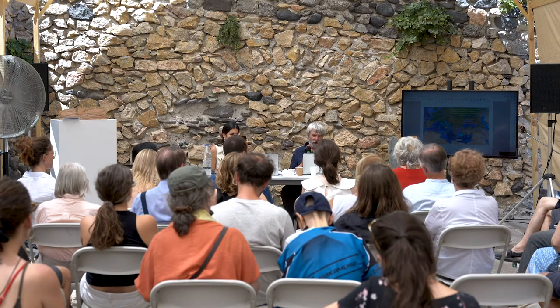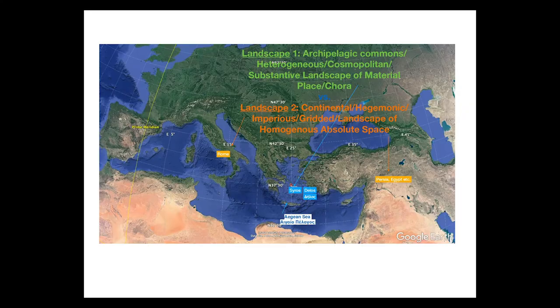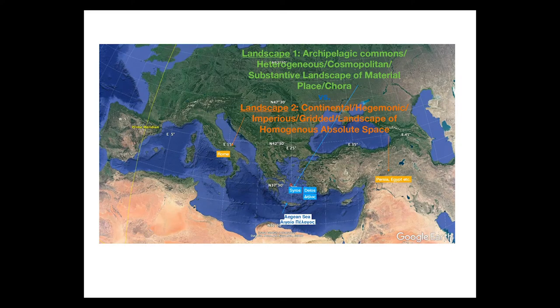Landscape 1, as defined, is archipelagic — based on the notion of the commons. In Eiderstedt, for example, the commons was very much the water of the sea, rich in shellfish; on land it would be common grazing land that people shared, binding them together. It was substantive — to do with touchable things, not insubstantial like Euclidean space. Landscape 2 is continental, hegemonic, imperial — a gridded landscape of homogeneous absolute space. The Romans loved squares and linear roads that ignored topography just to go straight.